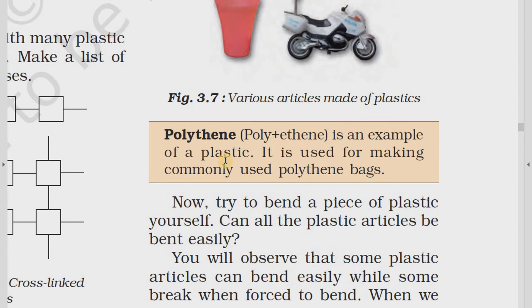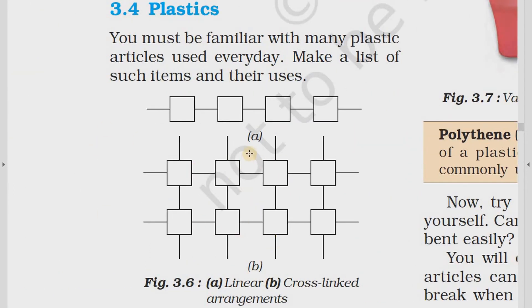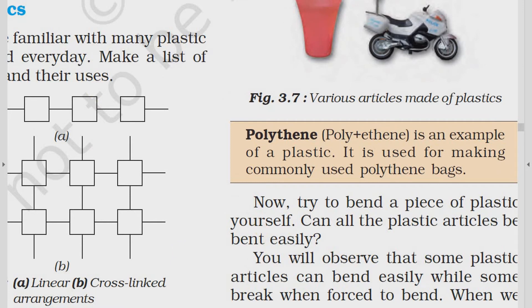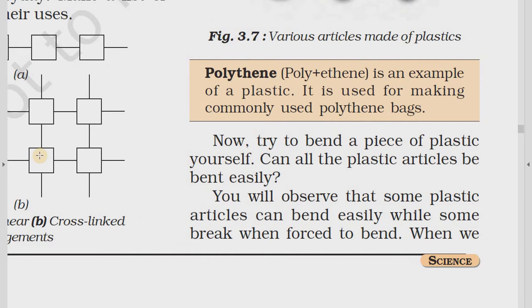Plastic is a polymer that can be molded into different shapes. The word plastic originates from the Greek word 'plastikos,' which means 'that which can be molded into a shape.' Plastic polymers can have different arrangements of monomers — either linear or cross-linked. Polyethylene is an example of plastic; it is an organic compound commonly used for making polyethylene bags.